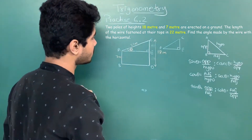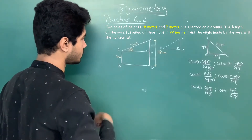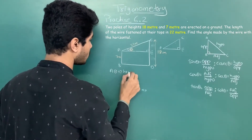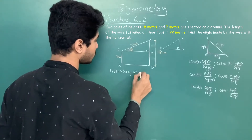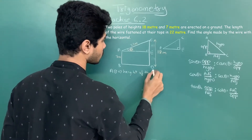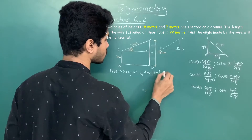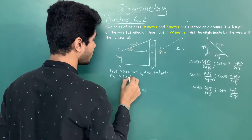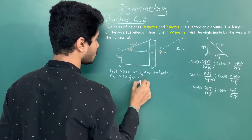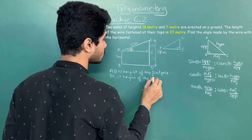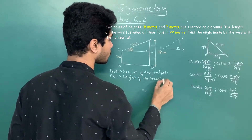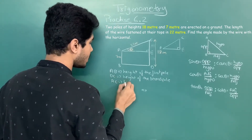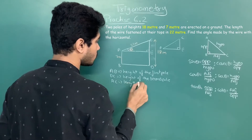AB stands for the height of the first pole, DC stands for the height of the second pole, and AC is the length of the wire.